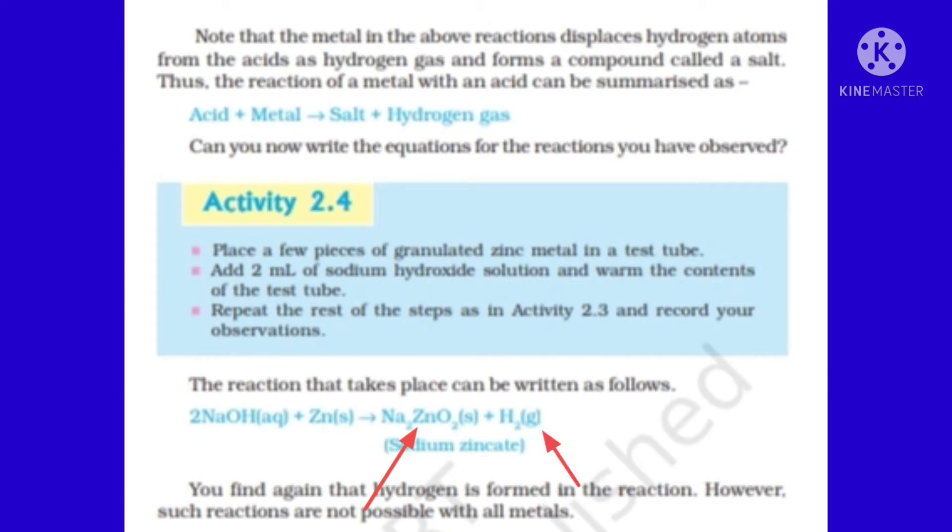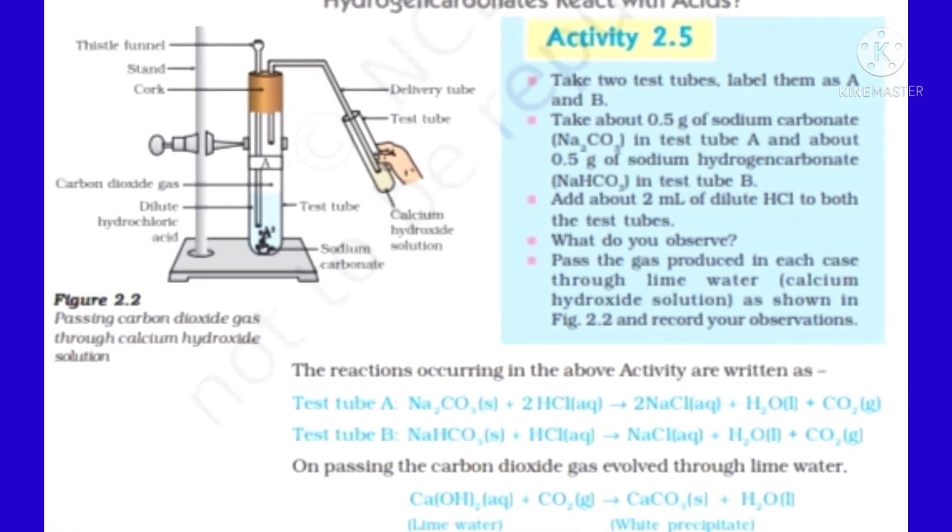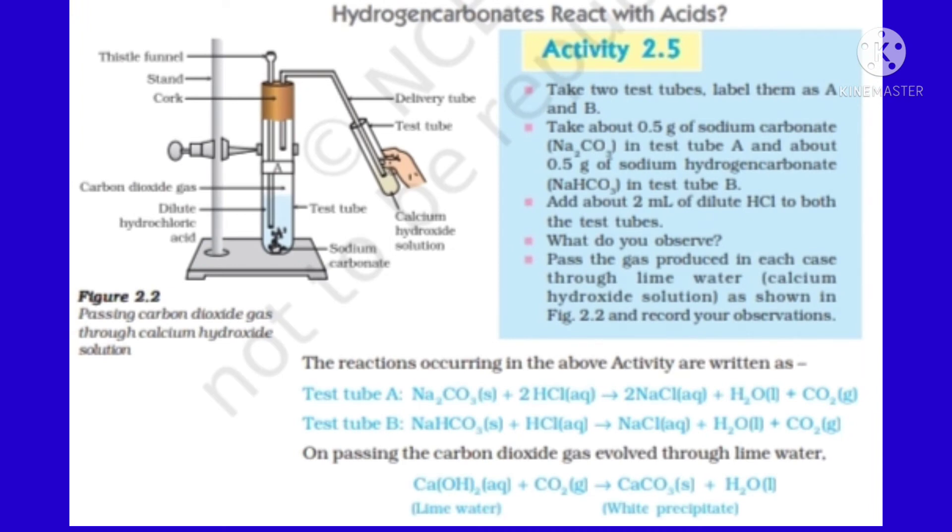Next chemical property of acid is reaction of acid with carbonate—metal carbonate or metal bicarbonate. Carbonate formula CO3, bicarbonate formula HCO3. When any acid reacts with carbonate or bicarbonate, we will get three products: one is salt, water, and the other one is carbon dioxide gas.